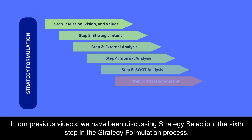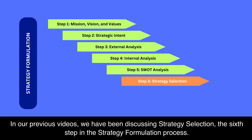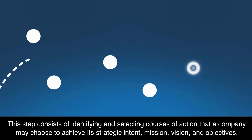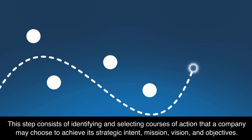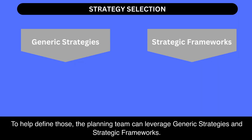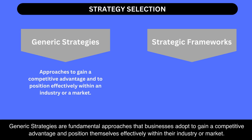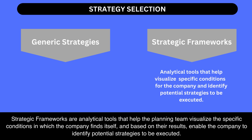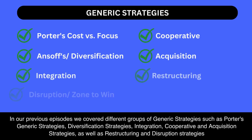In our previous videos we have been discussing strategy selection, the sixth step in the strategy formulation process. This step consists of identifying and selecting courses of action that a company may choose to achieve its strategic intent, mission, vision, and objectives. To help define those, the planning team can leverage generic strategies and strategic frameworks. Generic strategies are fundamental approaches that businesses adopt to gain a competitive advantage and position themselves effectively within their industry or market. Strategic frameworks are analytical tools that help the planning team visualize the specific conditions in which the company finds itself.